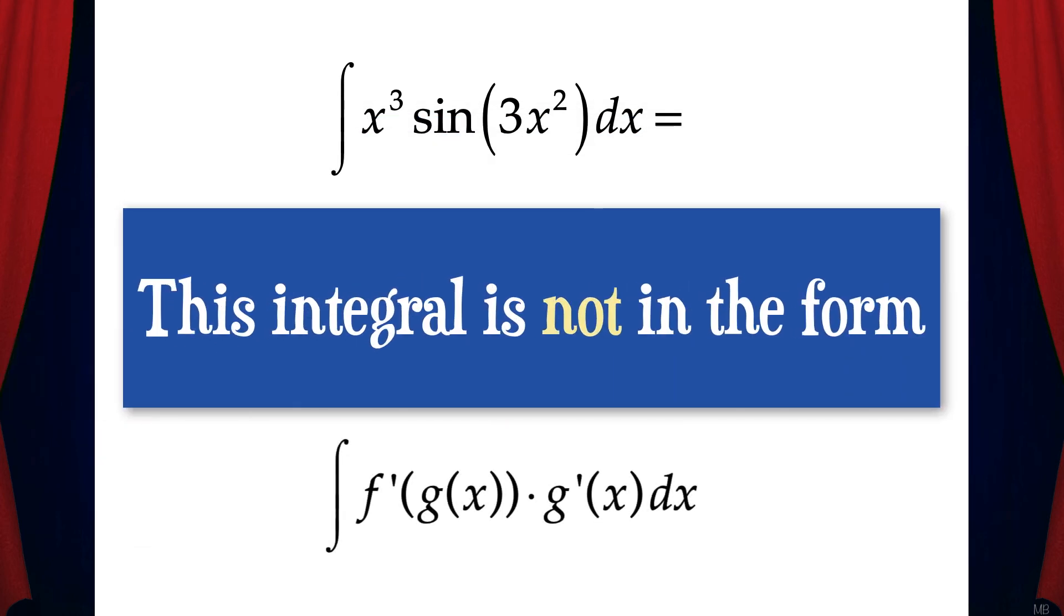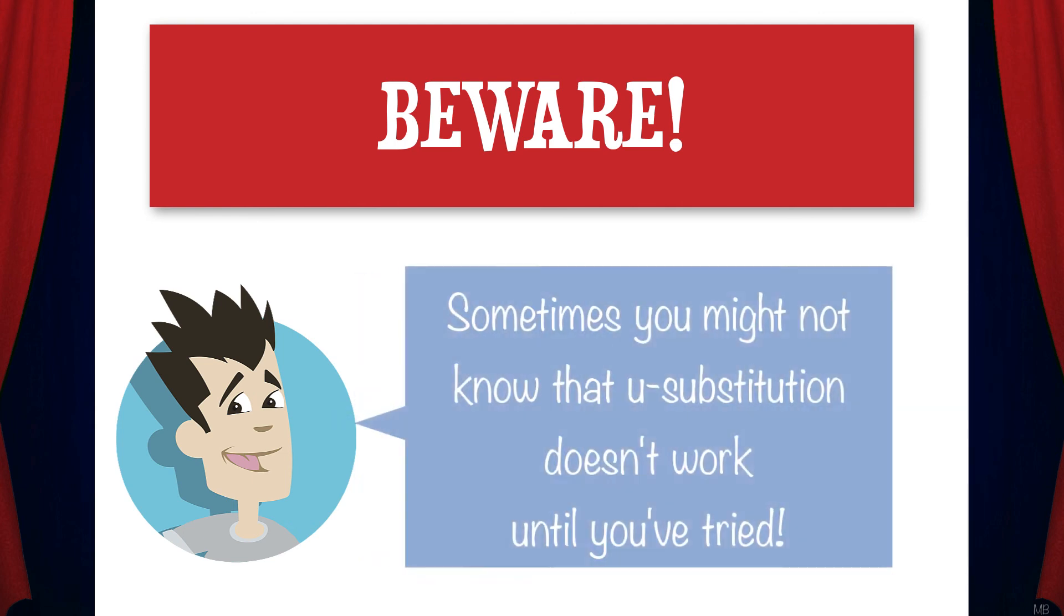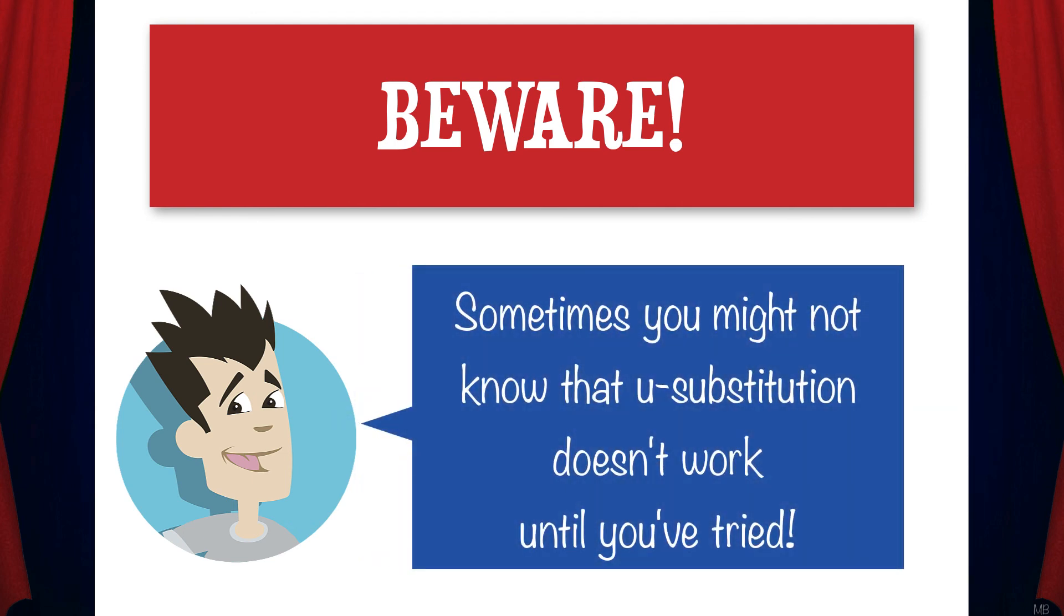The original integral is not in the form of f prime of g of x times g prime of x dx. Therefore, we cannot use u substitution. I wanted to show you this example to make you aware that some integrals look like they might be able to be solved with u substitution, but in reality they can't. And sometimes you might not know that u substitution doesn't work until you've tried, and that's okay.